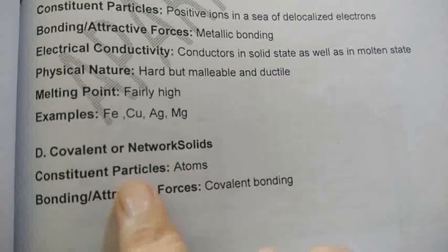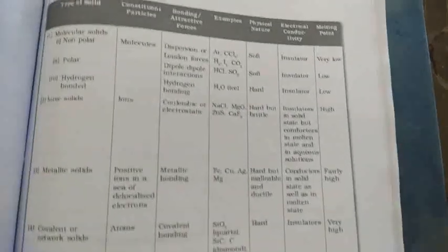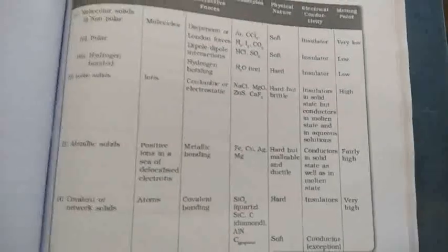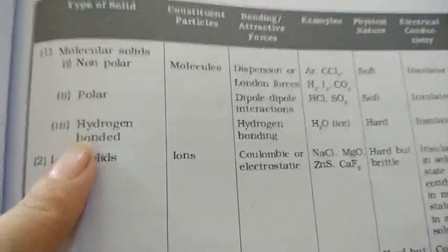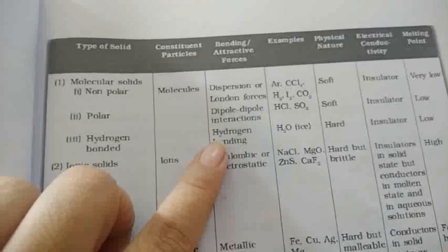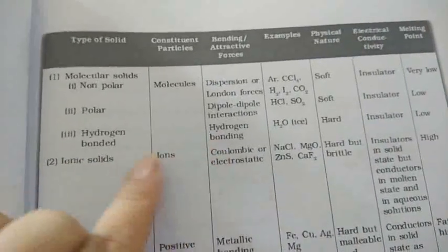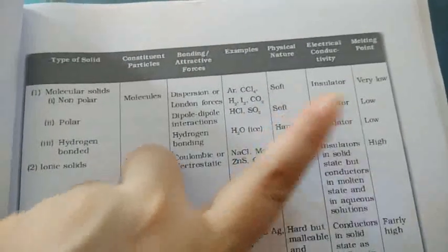Covalent or network solids have atoms as their constituent particles, and the bonding is covalent. Molecular solids are further divided into three types: non-polar, polar, and hydrogen-bonded. Their constituent particles are molecules. Forces include dispersion or London forces, dipole-dipole interactions, or hydrogen bonding. Their physical nature, conductivity, and melting point are given in the NCERT table.